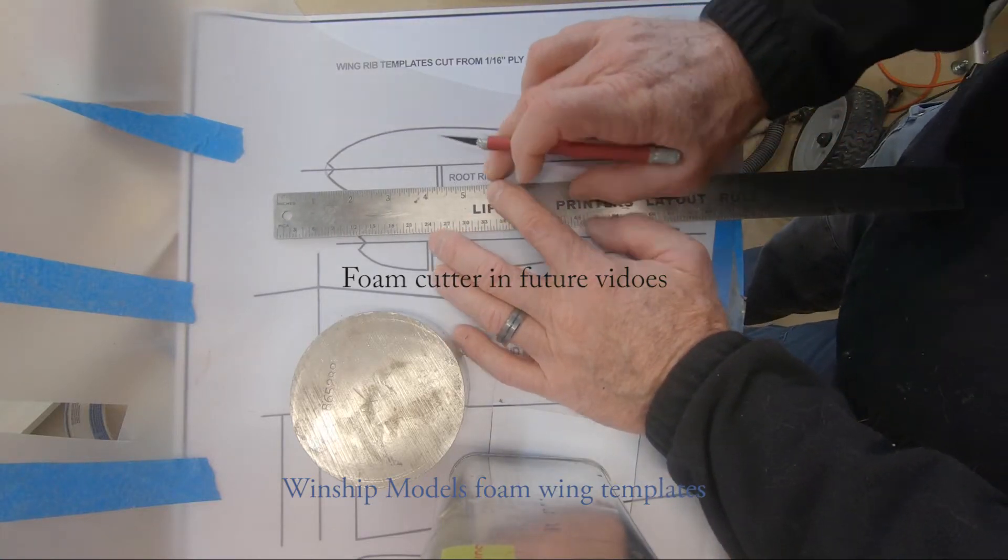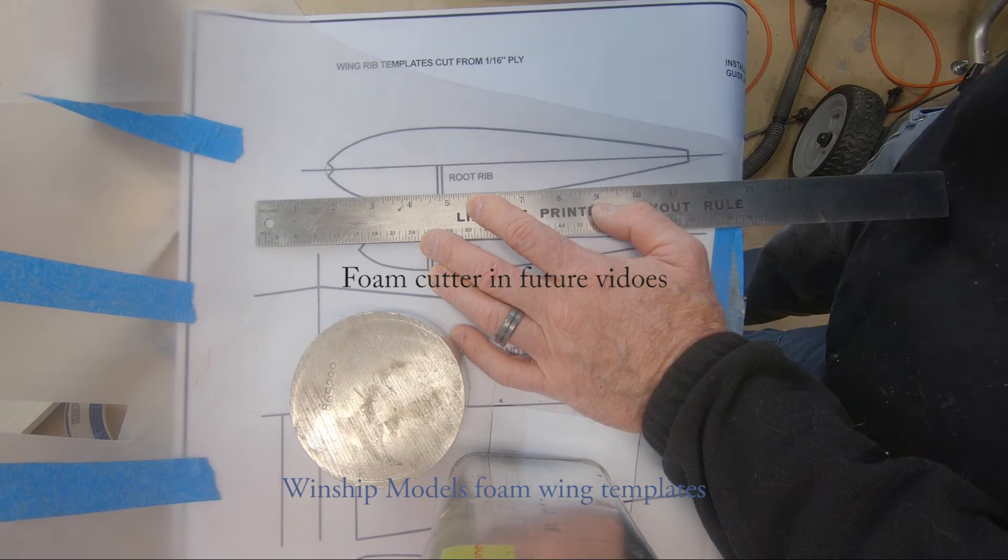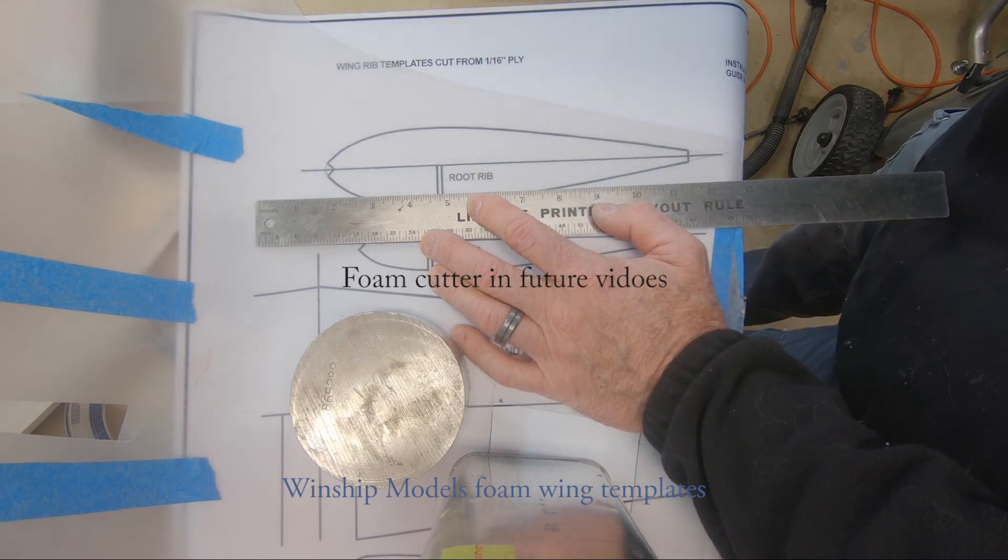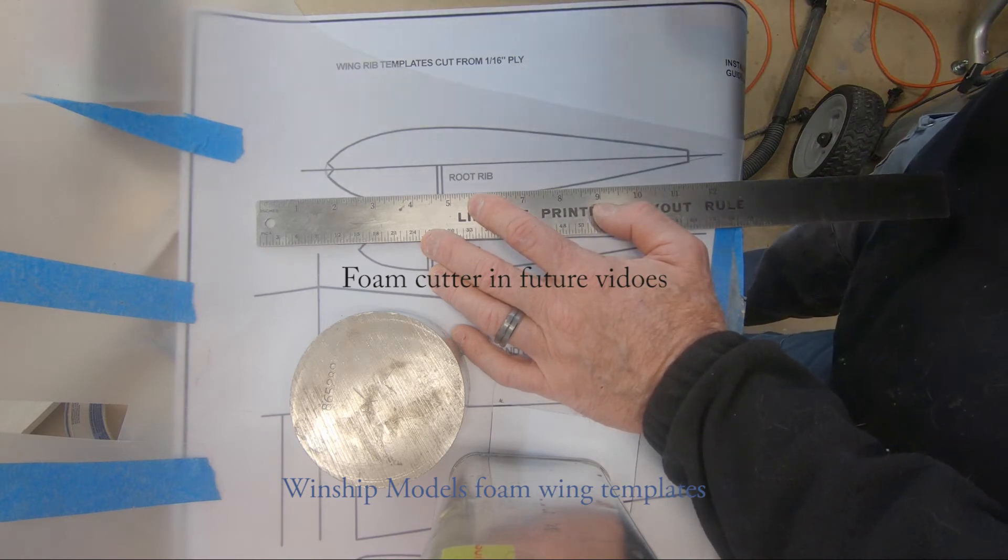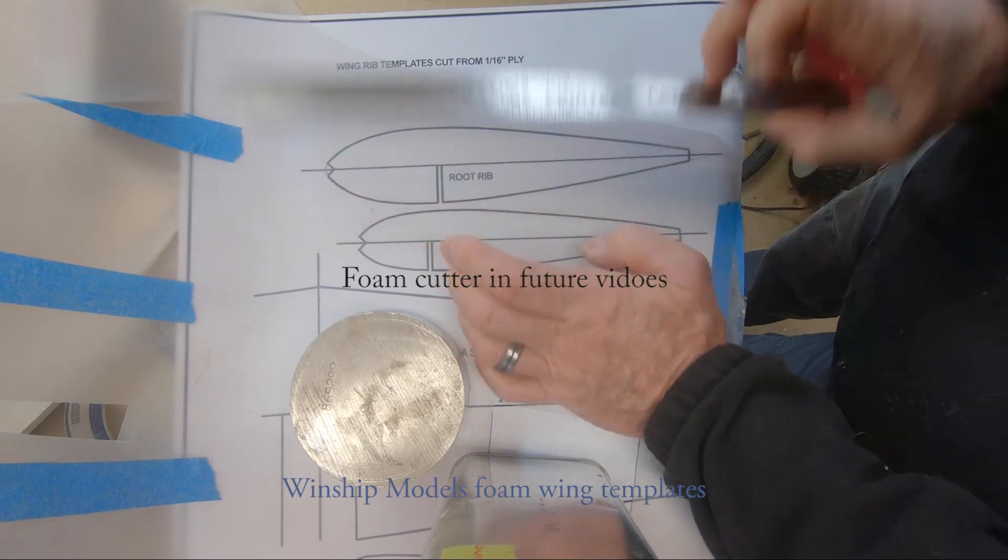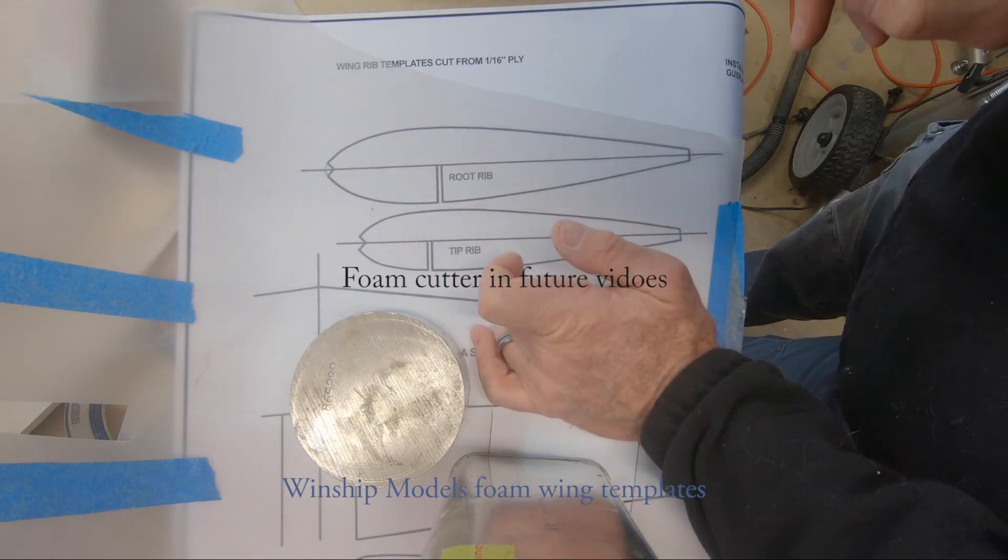Alright, I want to go over some templates here for the foam wing. So this is a plan view right here. They got a root and tip airfoil.